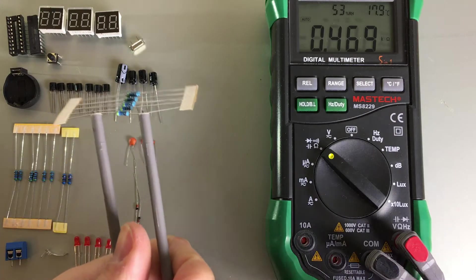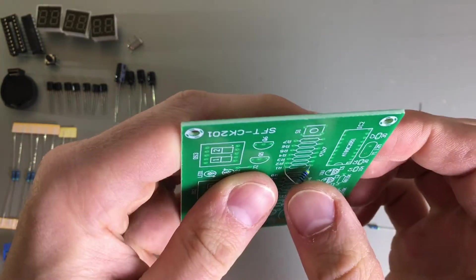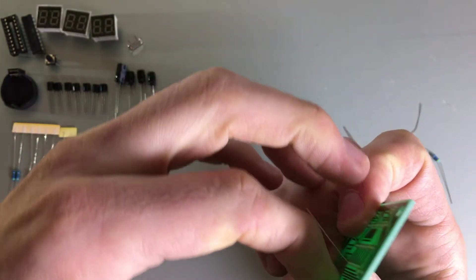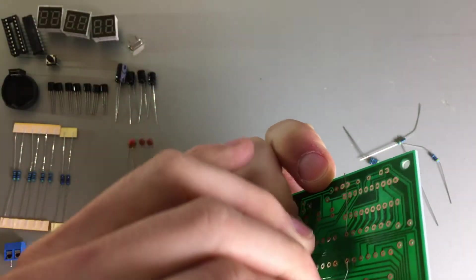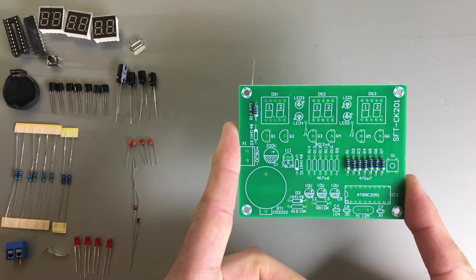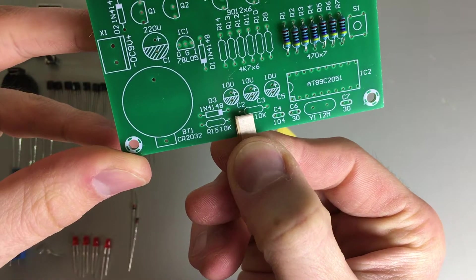I start by measuring and putting in place the individual resistors. To hold them in place, I bend the legs outwards by 45 degrees. Et voila! Let's do the second pair of resistors. And the third.